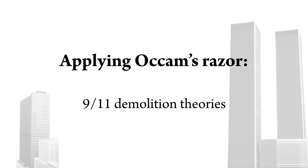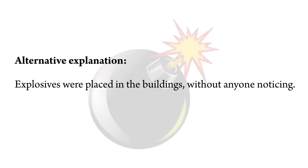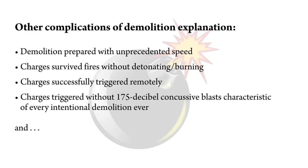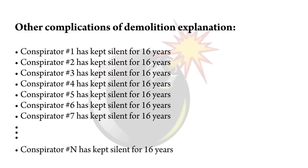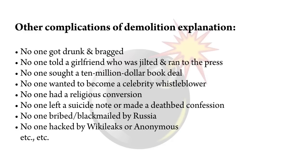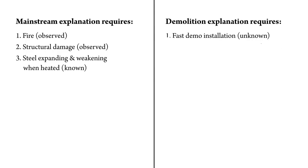Some people believe that on 9/11, the World Trade Center was brought down by intentional demolitions. Scientists have explained how these buildings might have collapsed due to fire and damage alone, but others believe explosives were placed in the buildings without anyone noticing anything suspicious. This is an extra condition necessary for the buildings to have been demolished intentionally. Demolition adds other conditions too — each person involved in the operation has kept silent for 16 years, so each person's silence is an extra necessary condition complicating the conspiracy theory. Why hasn't even one person blown the whistle? That's a job for Occam's Razor too.